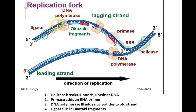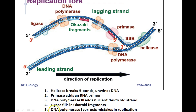Ligase is the enzyme that fills in the Okazaki fragments — adding DNA nucleotides to repair the gaps on the lagging strand. DNA polymerase 1 corrects mistakes in replication: first it removes the RNA primer, since we only have DNA in the final DNA molecule, and then it fixes any mistakes along the way. And that is replication.